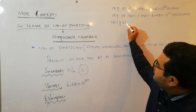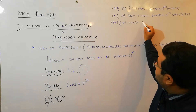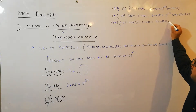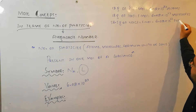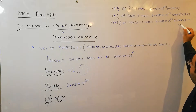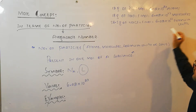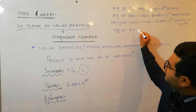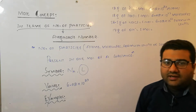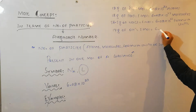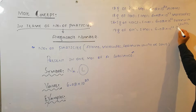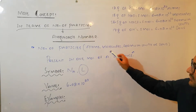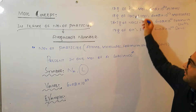58.5 grams of NaCl is equal to 1 mole and that is equal to 6.02 × 10²³ formula units. Similarly, 17 grams of OH⁻ is equal to 1 mole and that is equal to 6.02 × 10²³ ions. I have given 4 examples because there are 4 types of particles and 4 types of substances, to make this concept clear.